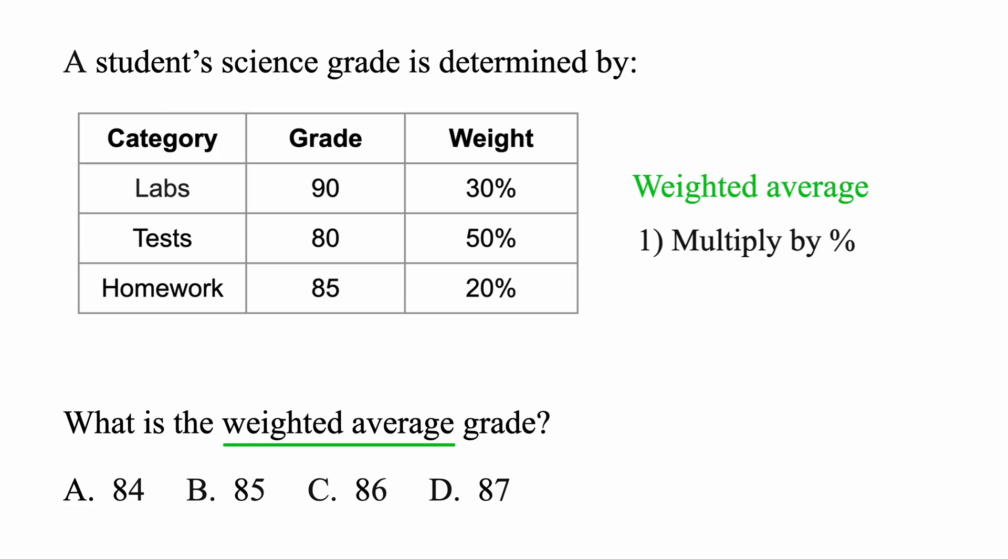To find a weighted average, the first thing you want to do is multiply each value by its percent. So on labs, the student scored a 90. That counts for 30% of their grade. We want to go ahead and multiply those together. Then for their tests, they scored an 80. That counts for 50%. Multiply those two. And finally, homework 85 counts for 20%. So multiply those as well. Let's go ahead and copy that down. The last step is we're going to add these together. Just put a plus sign in between right here. And one more right there. Finally, we're going to type this in the calculator, just like that.